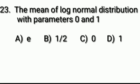Question number 23: The mean of the log-normal distribution with parameters 0 and 1 — Options: e^(1/2), 1/2, 0, 1. Answer: Option A, e^(1/2).